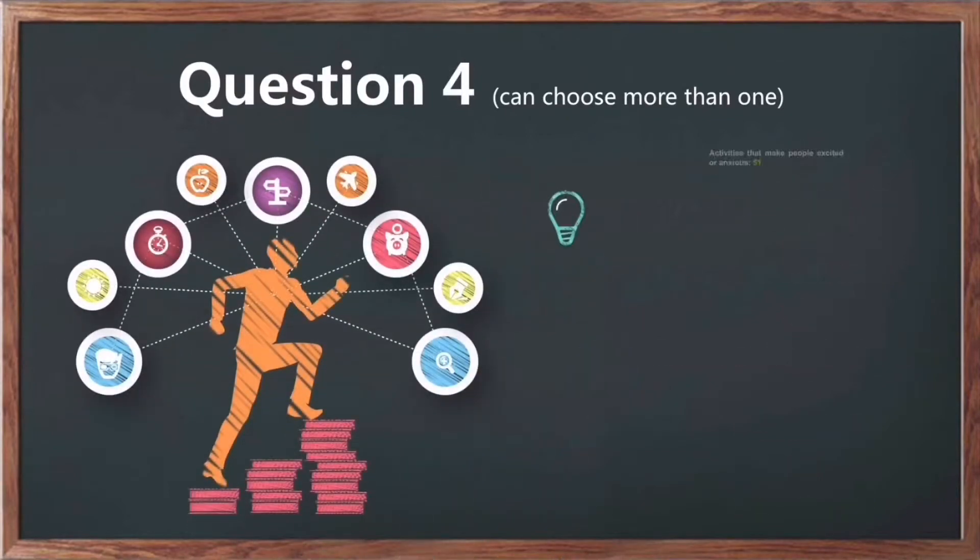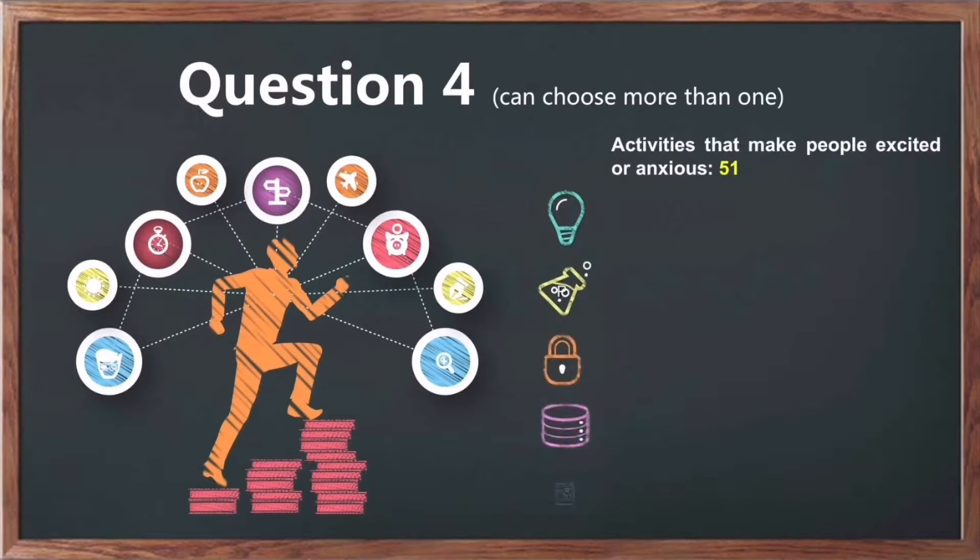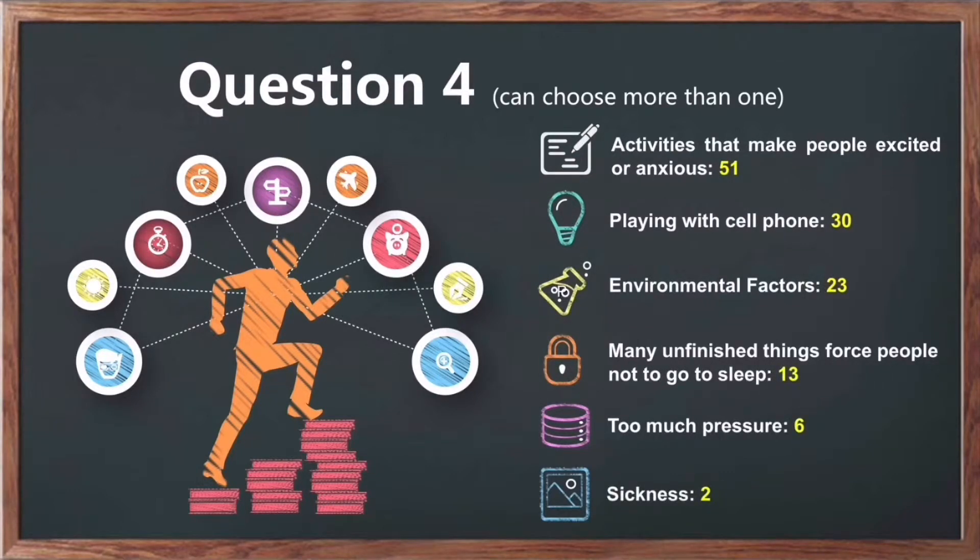As for the last question of the factors that will affect sleeping, the main factor is the events that will happen in the following day, which has influenced 51% of the people. The second big factor is the cell phones that affect 30% of people, followed by environmental factors like roommates or mosquitoes affecting 23% of people.